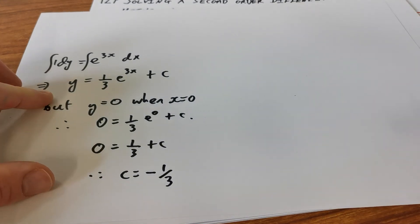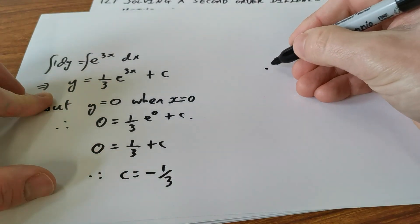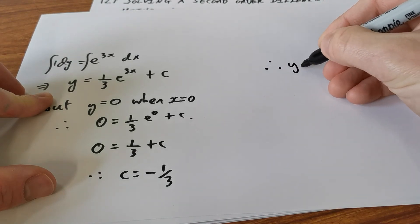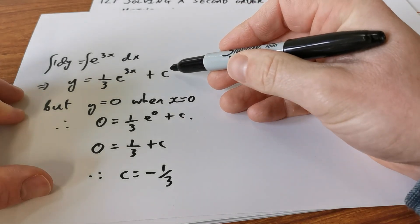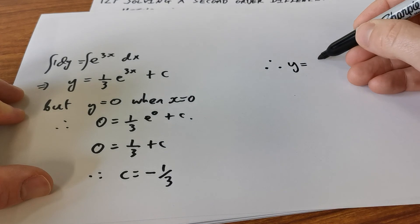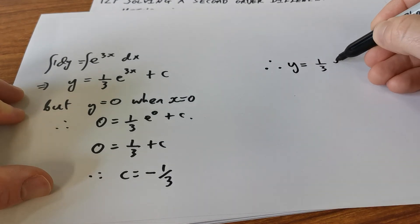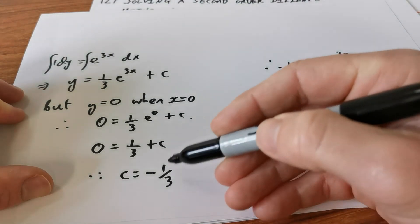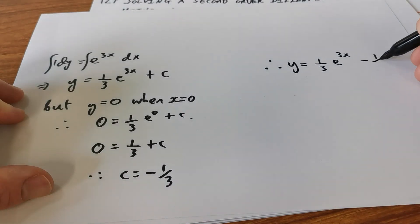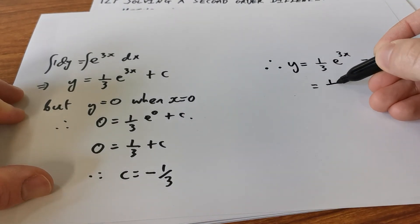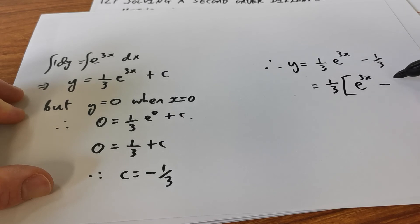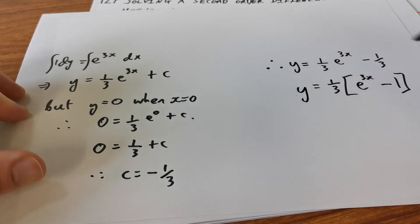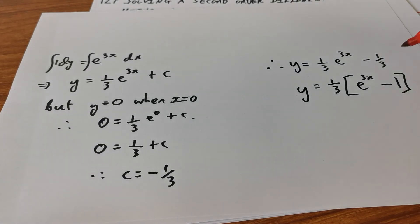Now I can phrase my final answer. y = 1/3·e^(3x) - 1/3. You might choose to factor out the 1/3, giving y = 1/3·(e^(3x) - 1), but you don't have to. Either form is a perfectly acceptable solution. That's the final answer — we've solved for y.